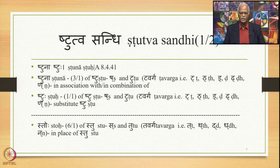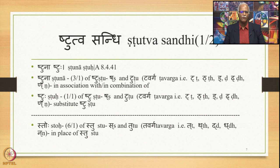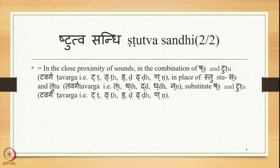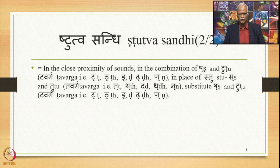Shtu means Sa and Tu. Tu means Tavarg, that is Ta-Tha-Da-Dha-Na. Shtuhu means 'in place of Shtu,' and the word Shtuhu continues from 8440. All this put together, the Sutra means: in the close proximity of sounds (Samhitayam), in the combination of Shtu and Tu, in place of Shtu, substitute Shtu and Tu.